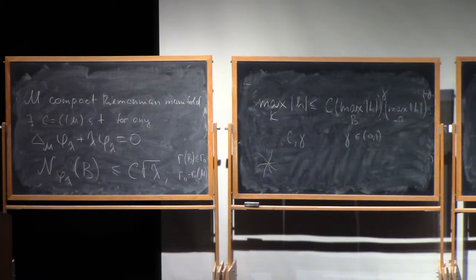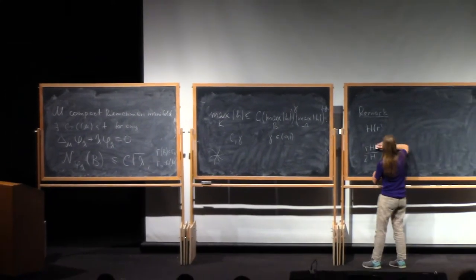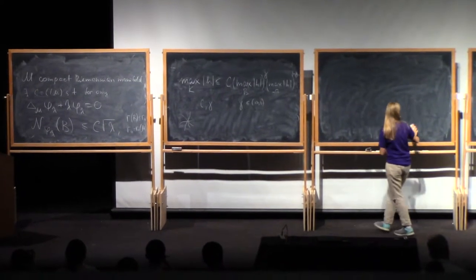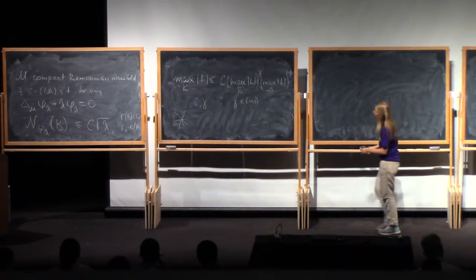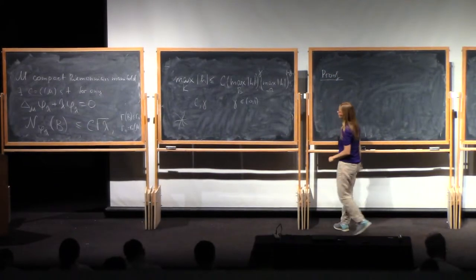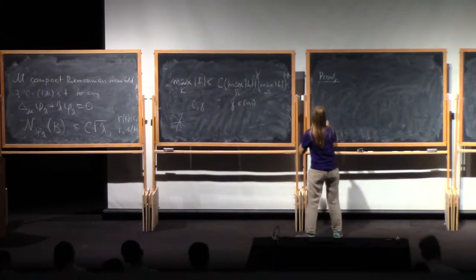If you think about two-dimensional picture, the order of vanishing is exactly how many nodal lines you have through one point. Now we have estimate from above on this picture. To prove it, we will use the lifting and general version of three spheres. So first of all, go from function phi to function h.